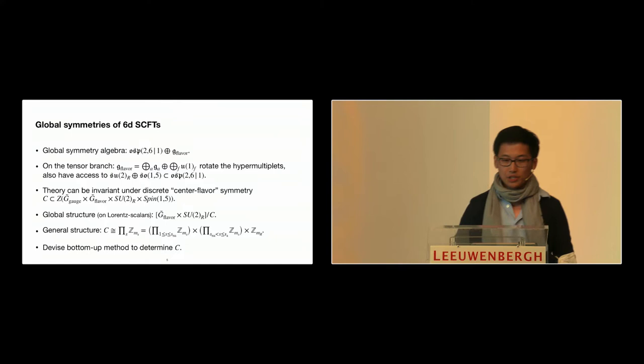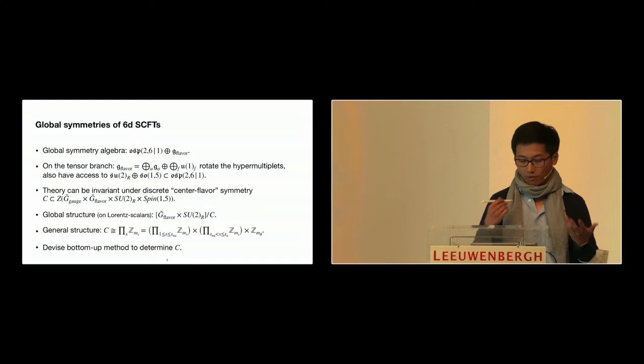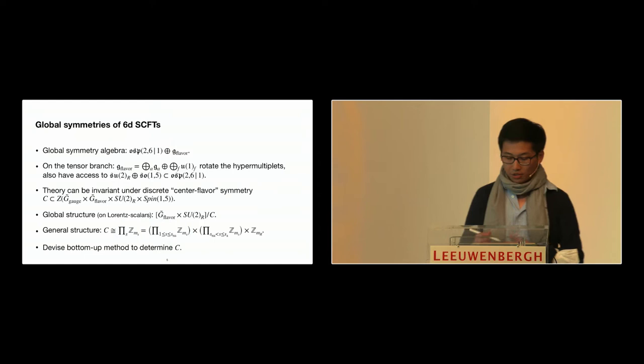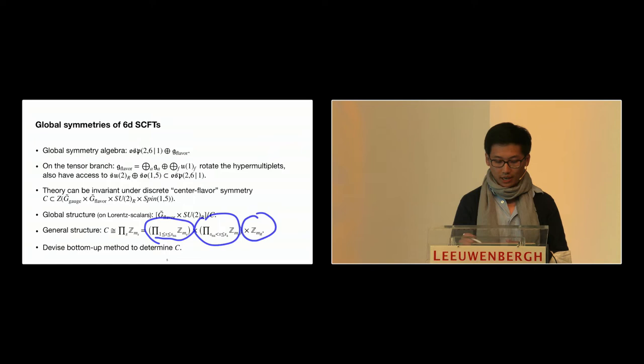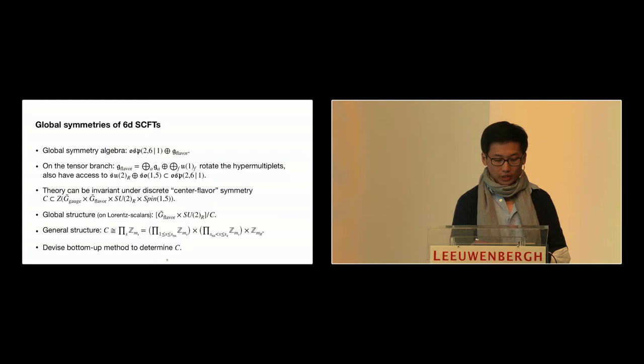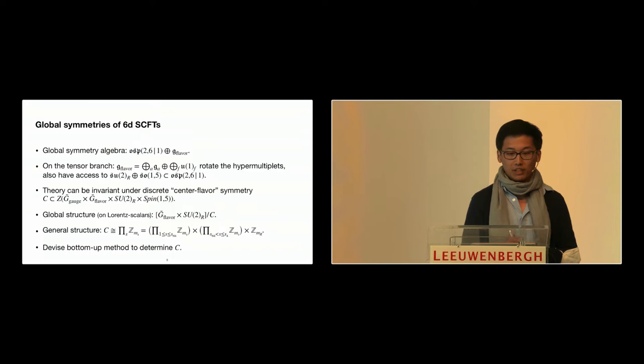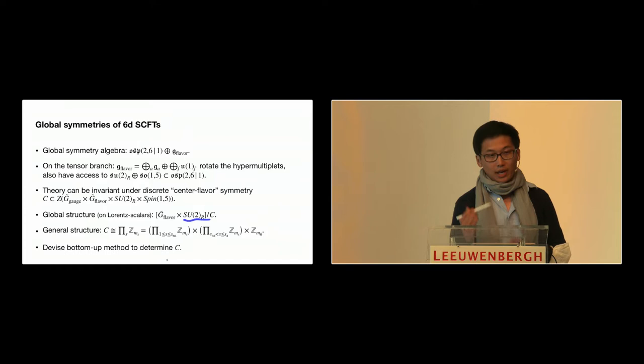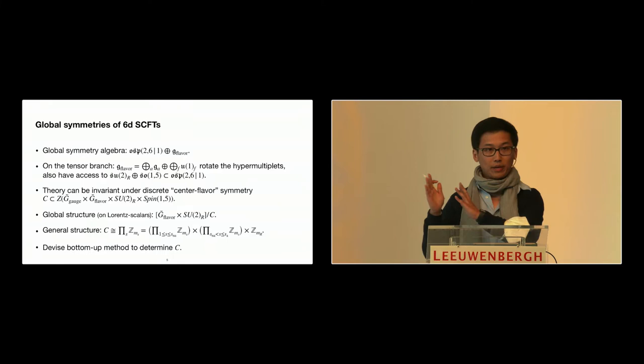As a general comment, this subgroup C is a discrete finite abelian group, so it decomposes into a product of finite factors. It can generally be split into three parts: the first part embeds only into the non-abelian part of the flavor group; the second part embeds non-trivially into the abelian factor and the non-abelian flavor part; and finally there will be a single discrete quotient that may also embed into the R-symmetry. I will go through step-by-step into these.